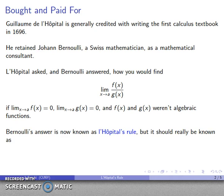Bernoulli gave him an answer. He said, here's how you would do it. The answer that Bernoulli created, that he gave to L'Hopital, is now known as L'Hopital's rule. But in light of the fact that Bernoulli was the one who actually discovered it, it should actually be known as - well, it should be known as L'Hopital's rule.